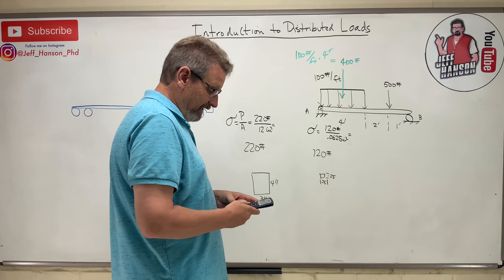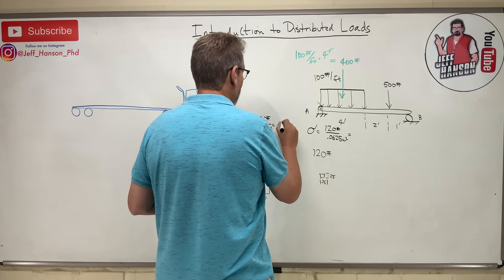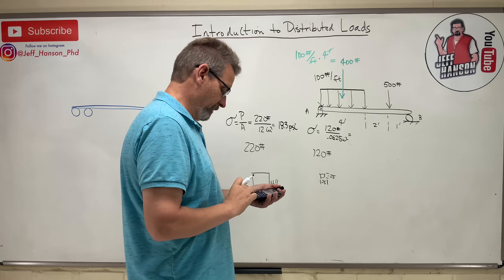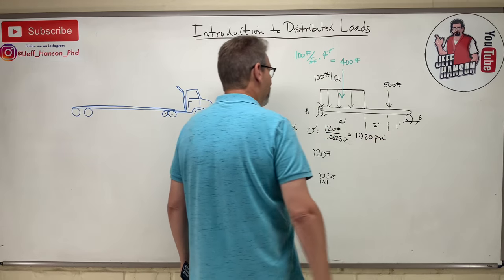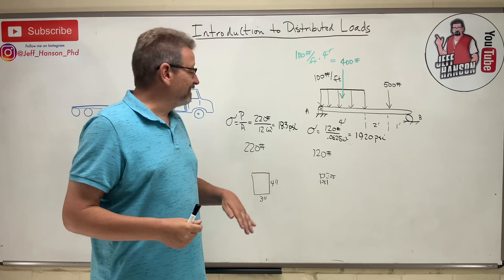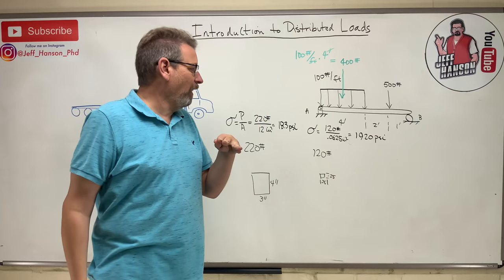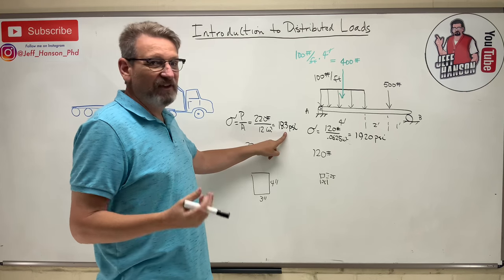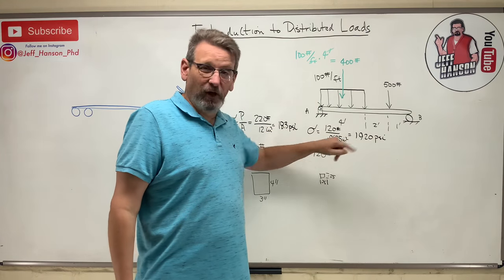So if you're dancing with me, you get 220 divided by 12, you're going to feel 18.3 PSI. But if you're dancing with Linda over there, 120 divided by 0.0625, you're going to feel 1,920 PSI. Now I don't know what the shear stress of skin is, but if I step on you, it's going to hurt. But if she steps on you, she may be standing on the floor, like through your foot, right? Punctured a hole right in you. So that's distributed load. If you take a big load and you distribute it over a bigger area, the intensity of the force is much less. Whereas a smaller load, even over a very small area, the intensity of the load is very high.